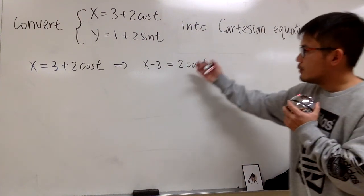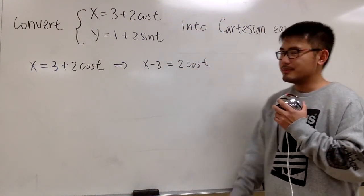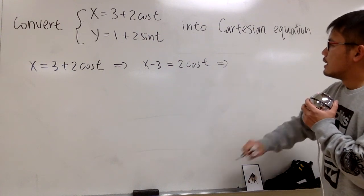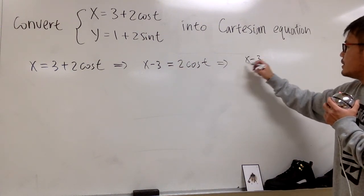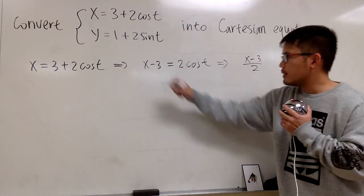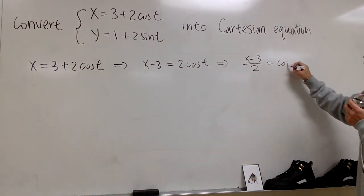And then we can definitely divide both sides by 2. So at the end, we have x minus 3 over 2 equals to cosine t.